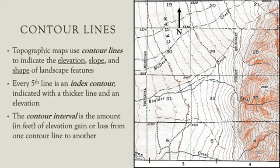Contour lines are the definitive characteristic of topographic maps. These lines are shown in brown on land or blue on water and are drawn so they connect points of equal elevation. With a little practice, a viewer can interpret the elevation, slope, and shape of the landscape.